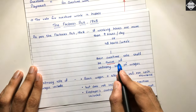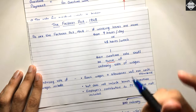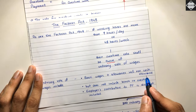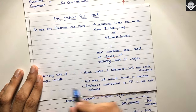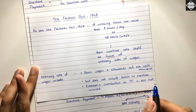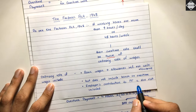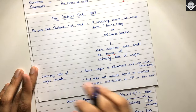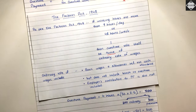When the Factories Act says twice the ordinary rate of wages, you need to know what 'ordinary rate' means. Ordinary rate includes basic wages plus allowances, including non-cash allowances. It does not include bonus, overtime, or the employer's contribution to provident fund. When we solve the full problem in the next video, you'll understand this better.